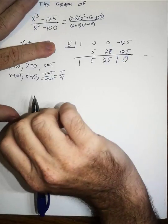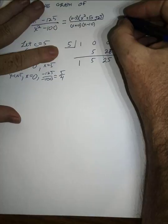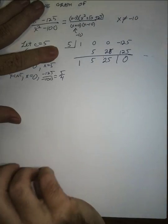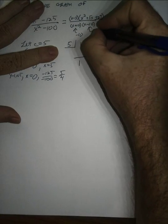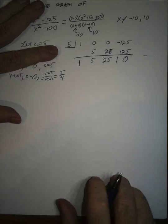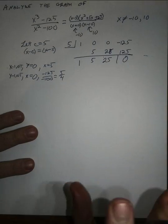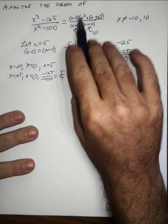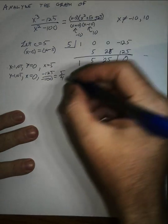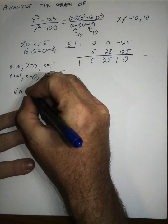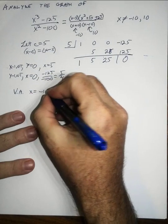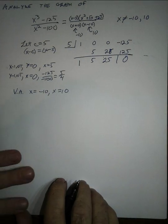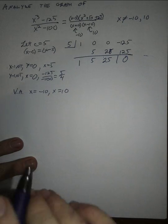Looking at domain restrictions from our factored denominator: x can't be negative 10 (the zero of x + 10) and x can't be 10. Since those aren't common factors with the numerator, we know these are vertical asymptotes — vertical asymptotes at x = −10 and x = 10. There are no removable discontinuities; no holes in the graph.